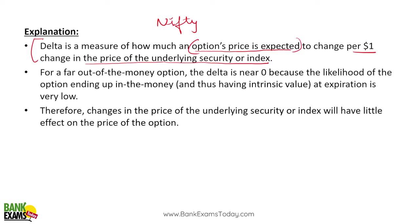Delta measures the relationship between the option's price and the underlying security — in this case, Nifty 50. If there is a ₹1 change in the index, how much will it affect the option price — that is what delta measures. For a far out-of-the-money option, the delta is near zero, because the likelihood of the option ending up in the money and having intrinsic value at expiration is very low.